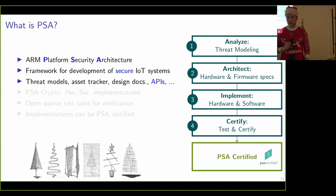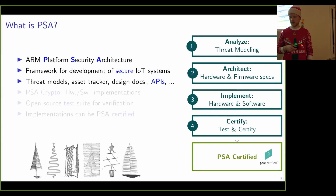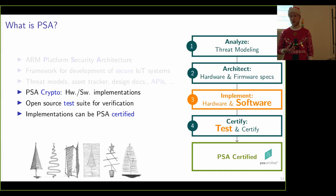During our search for cryptographic APIs, we found the ARM Platform Security Architecture (PSA), which provides guidelines for developing secure IoT systems. PSA consists of four stages: analyze, architect, implement, and certify. The framework provides developers with resources like threat models, asset trackers, design examples, and a complete cryptographic API design. The OS integration is situated at the implementation stage, which includes hardware or software implementations of the PSA Crypto API. An open-source test suite is available on GitHub, and systems can be certified by PSA.